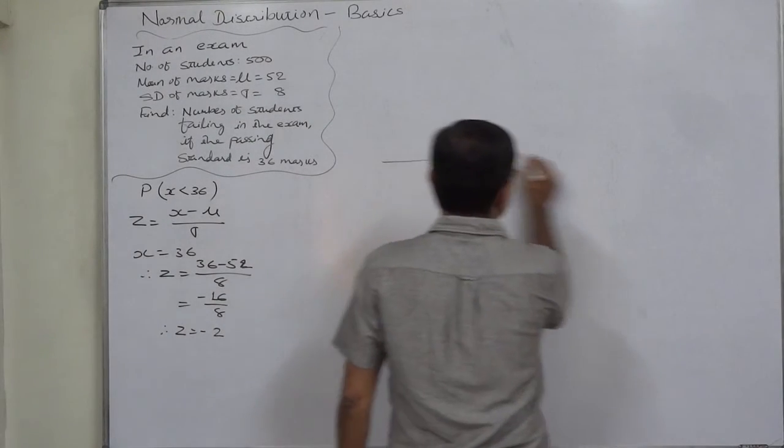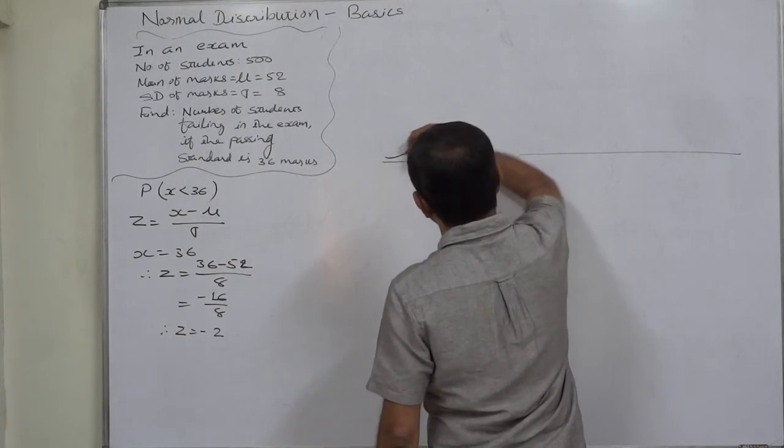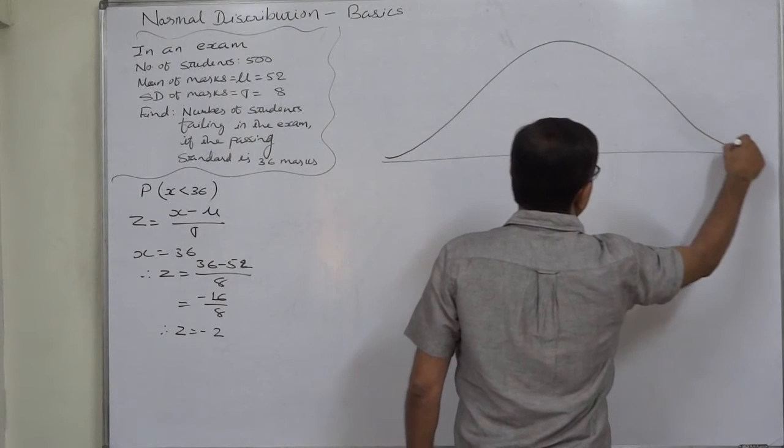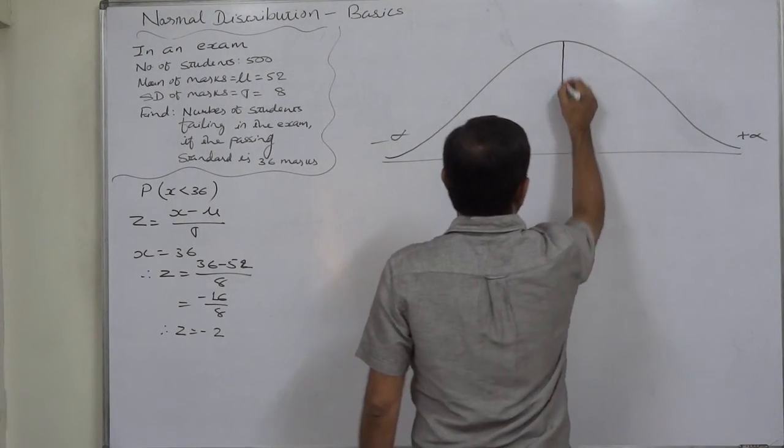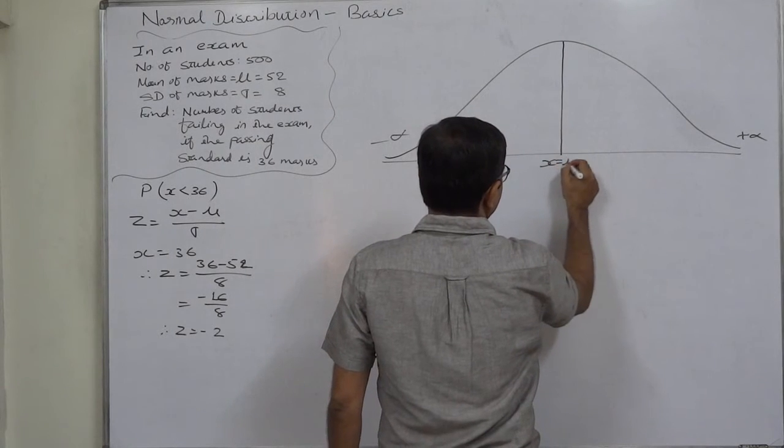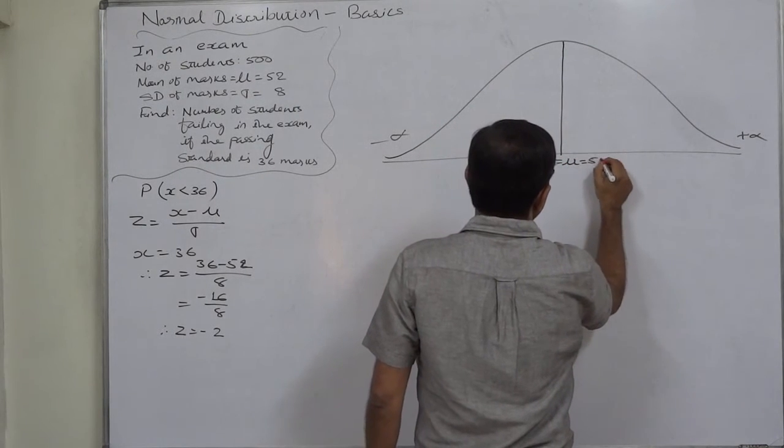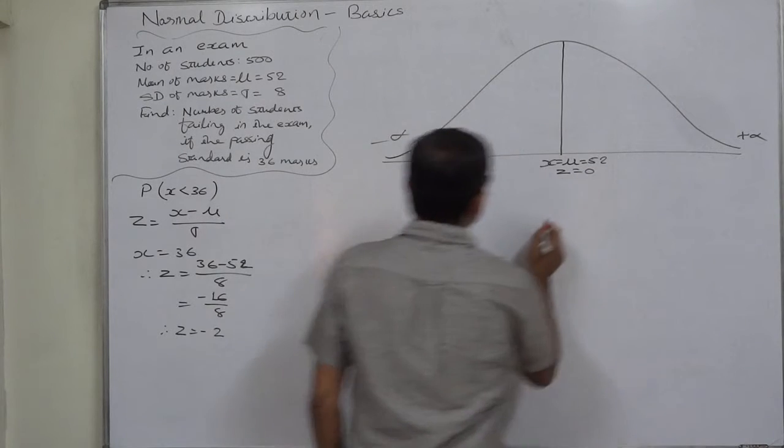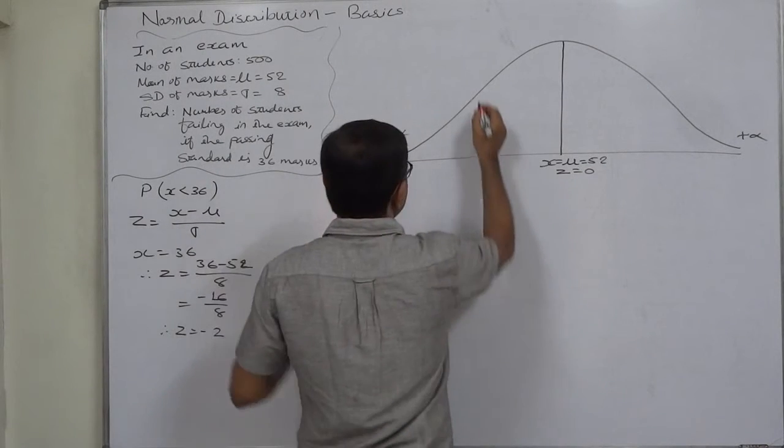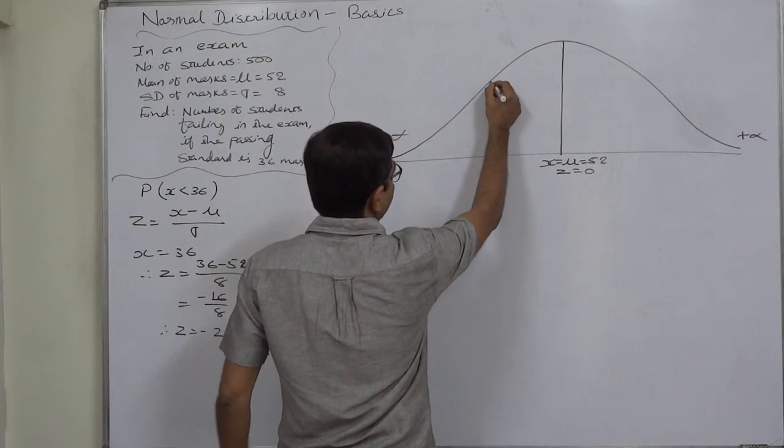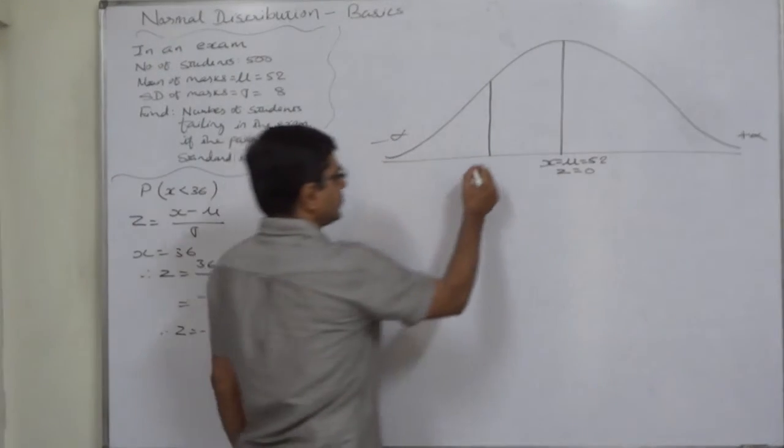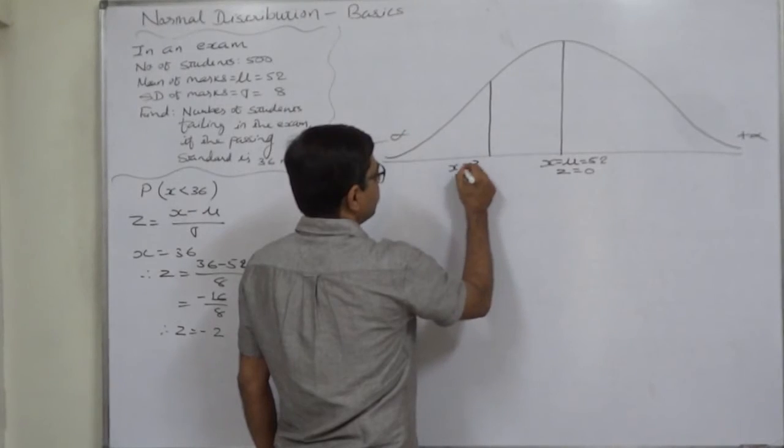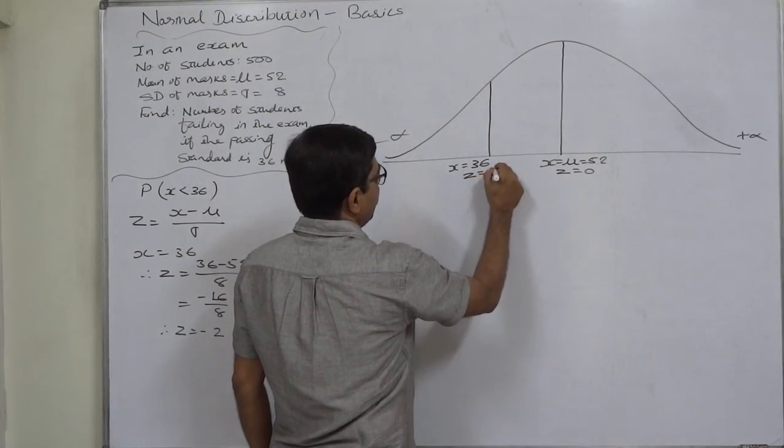Let us draw the sketch of the normal curve. X takes value exactly equal to mean, so Z is 0. 36 is less than mean, so it falls in the left-hand side region where X is 36 and Z is minus 2.